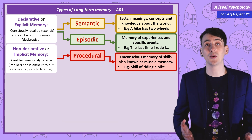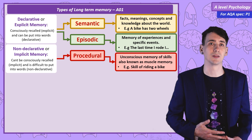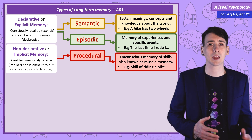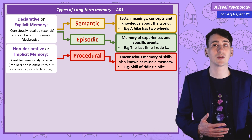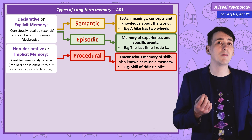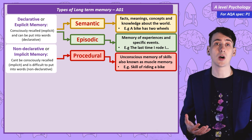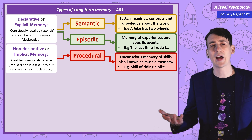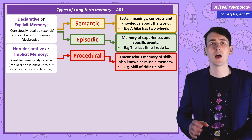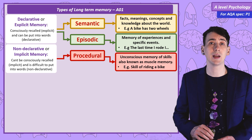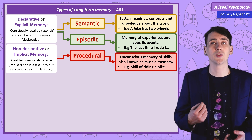From those examples we can see we've got two categories: declarative and non-declarative. To give a quick definition for the two declarative memories: episodic memories are our memories for particular events in our lives, and semantic memory is our knowledge about the world — facts and concepts. And to define non-declarative procedural memory: it's an unconscious memory of skills, known as muscle memory.